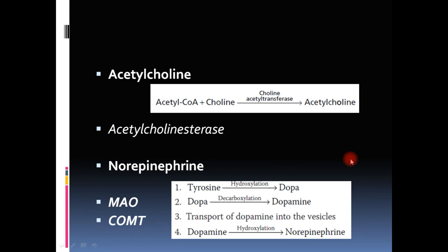After norepinephrine is secreted into the nerve ending, it acts for a few seconds, and then 50–80% of it is taken back by reuptake into the nerve terminal. The remainder is degraded by enzymes — monoamine oxidase (MAO) or catechol-O-methyltransferase (COMT) — which degrade the remaining norepinephrine.